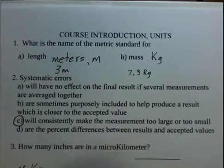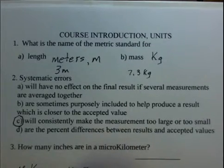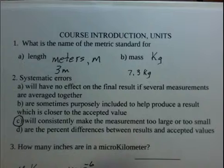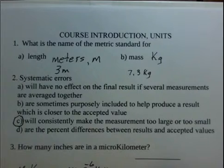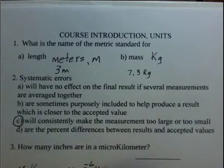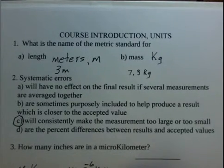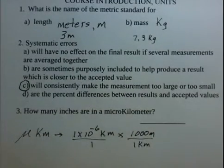Well, the micro symbol is one times ten to the minus six for a value. So micro kilometer. And then a kilometer is a thousand meters. I'm going to divide this by one. And now as I bring in the conversion factor, I need to put the kilometer of the conversion factor in the denominator, so these units will cancel.